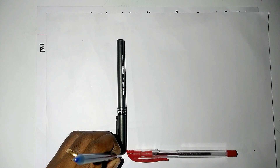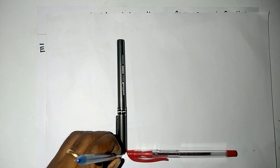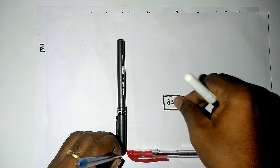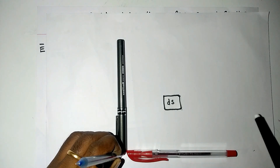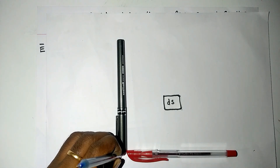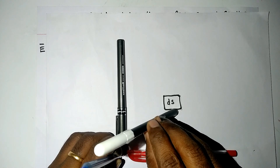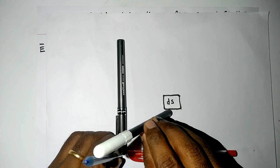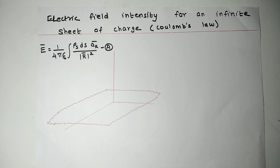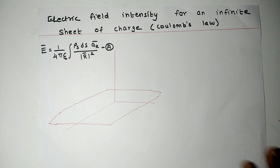Let us assume that the height of this blue pen is h. To find out the value of electric field intensity at this point, we have to consider a differential area on the sheet of charge, and from ds we have to construct a distance vector starting from ds and terminating at the point where electric field intensity is to be estimated. Now we are going to transfer the demonstrated contents into a pictorial representation.